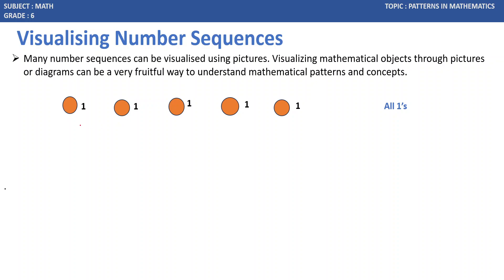If we observe this picture here, this is 1, 1, 1. So this sequence we call as All Ones.